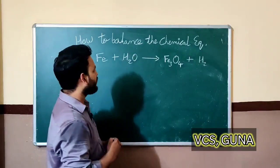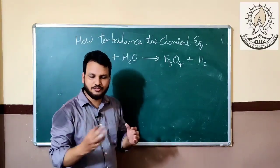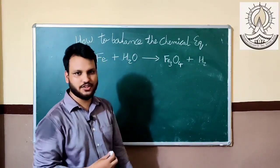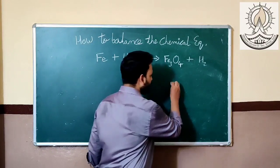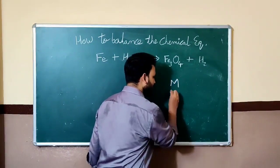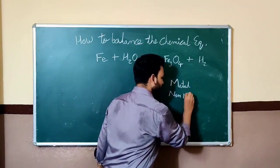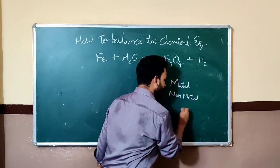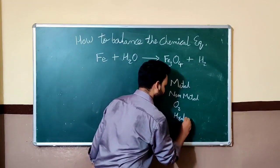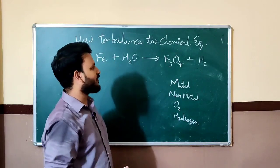In this session, we will learn how to balance chemical equations. You have to follow certain tricks regarding balancing chemical equations. The order to follow is: first, metal; then, non-metal; then, oxygen; and then, hydrogen. This is the balancing pattern we follow when balancing chemical equations.